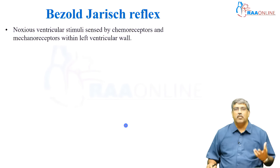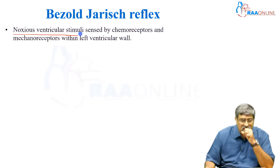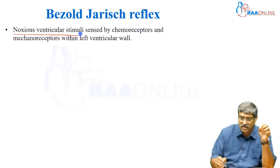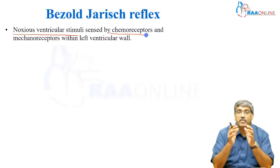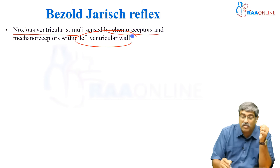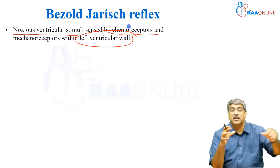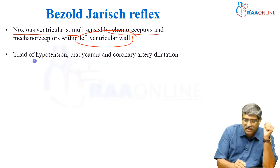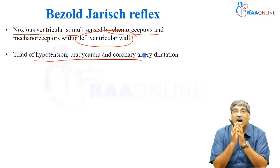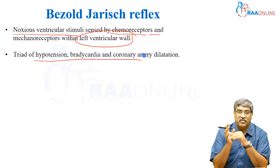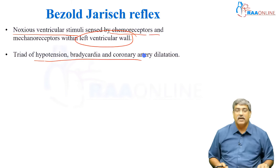Now coming to Bezold-Jarisch reflex. Here there is a noxious ventricular stimulus sensed by chemoreceptors and mechanoreceptors which are located within the left ventricular wall. Bainbridge reflex was in the atrium; here it is in the left ventricular wall. This reflex leads to a triad of hypotension, bradycardia, and coronary artery vasodilation.